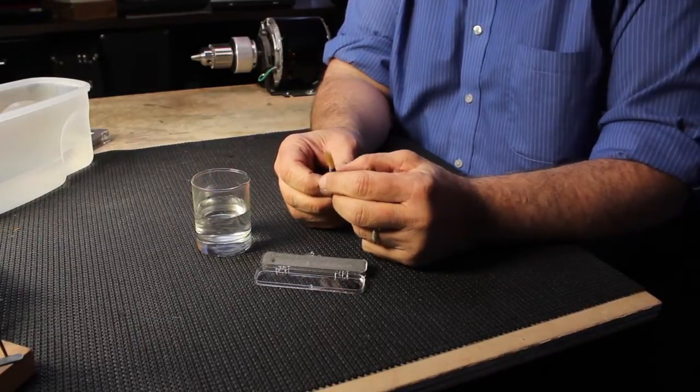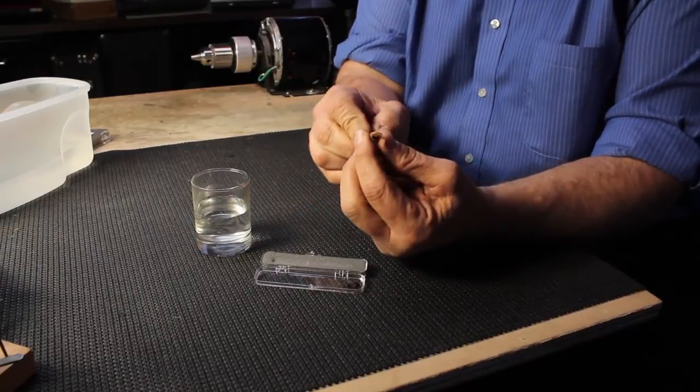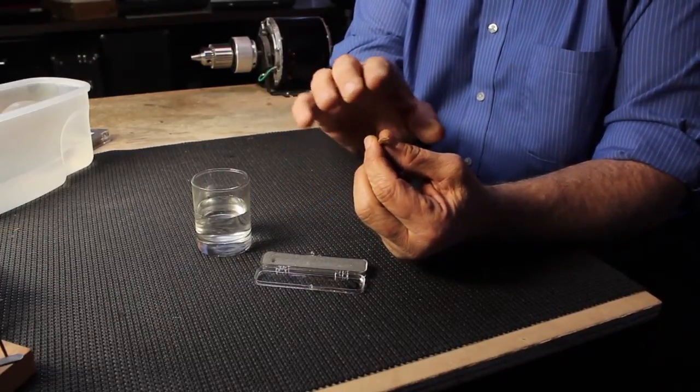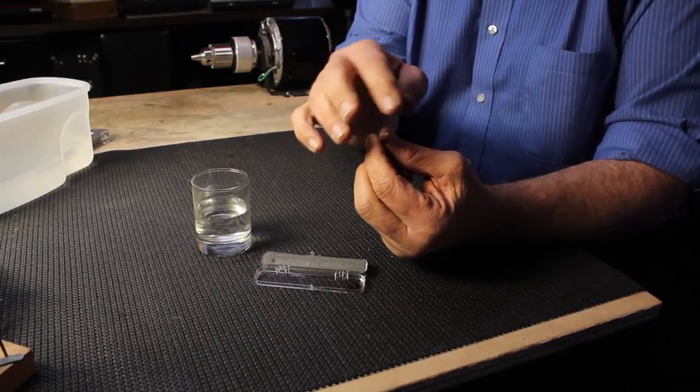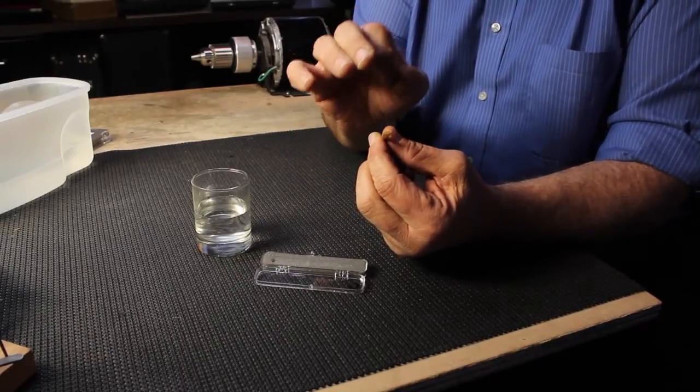Alright, so once the reed has gotten soaked enough, you will be able to see that the tip has re-formed itself. It's nice and closed on the sides. The tip opening should not be too large.